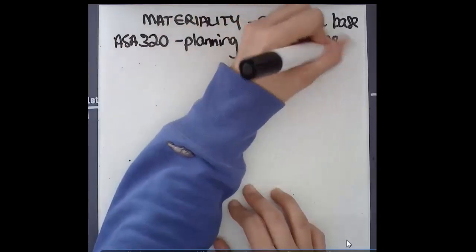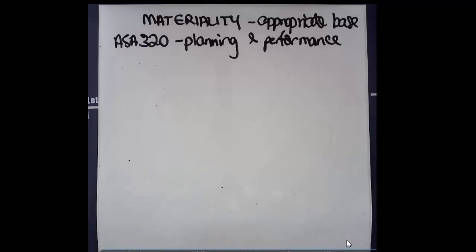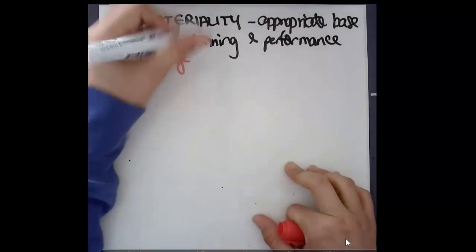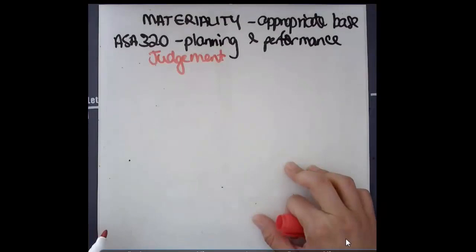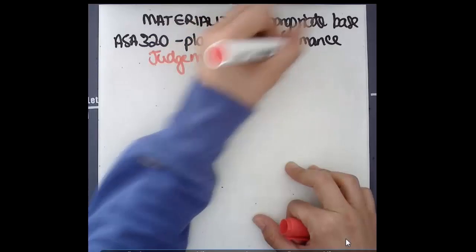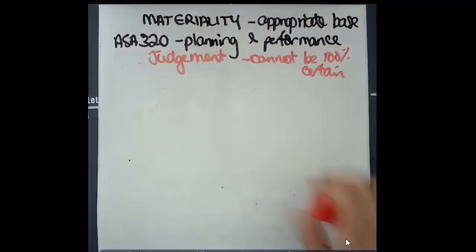Remember materiality is that dollar value of error or qualitative error that would cause the decision maker to perhaps reconsider the choices they've made. So it's difficult to figure out exactly what that dollar value is, and the key thing is that it requires a significant amount of judgment. There's no right answer. We cannot be 100% certain of what materiality should be.